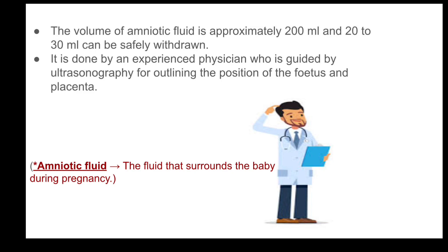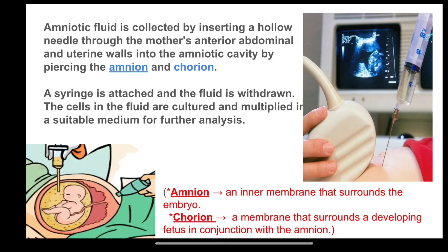The fluid that surrounds the baby during pregnancy is known as amniotic fluid. Amniotic fluid is collected by inserting a hollow needle through the mother's anterior abdominal and uterine walls into the amniotic cavity, by piercing the amnion and the chorion.